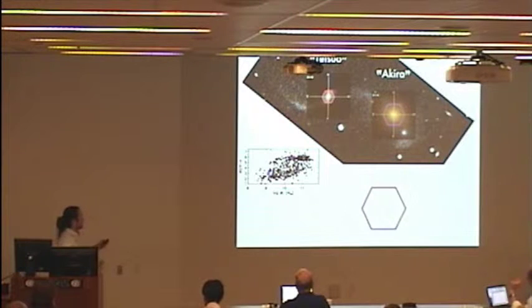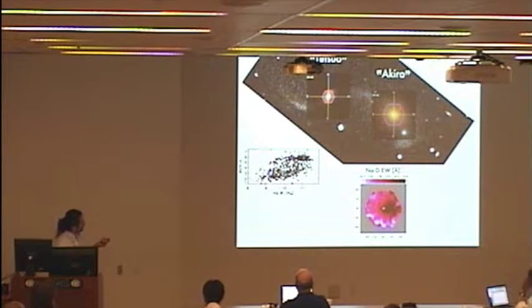So measuring the sodium D equivalent width of every spaxel in Akira generates this map here, and this illustrates what MaNGA can do. At each spaxel, which measures 0.5 arcseconds by 0.5 arcseconds, you get a full spectrum going from 3600 angstroms to 10,300 angstroms at a spectral resolution of about 2000. And you can do a lot with this data. But for this map, we plotted the sodium D equivalent width, and with darker spaxels representing more absorption.